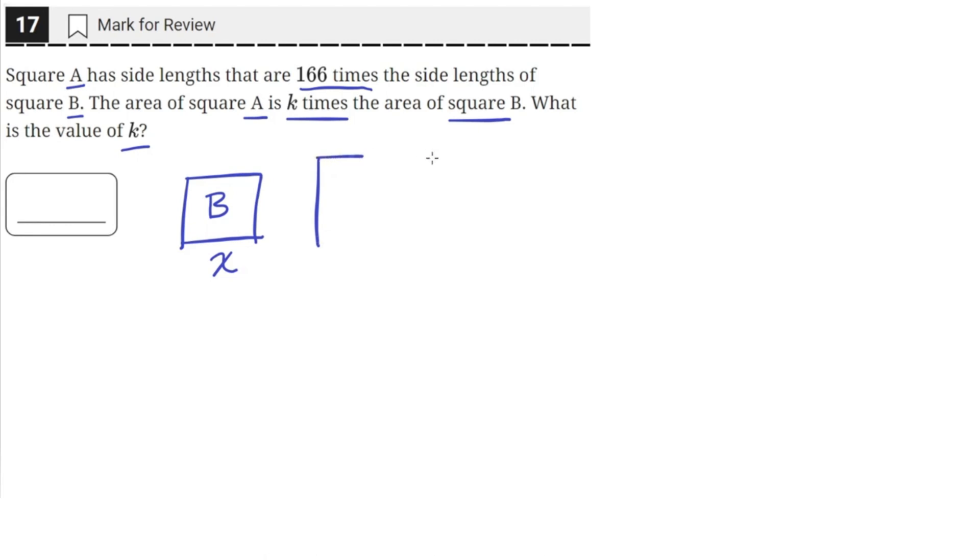Then we have square A, whose side lengths are 166 times the side lengths of square B. So the length of the side of this square is 166 times the length of square B's side.